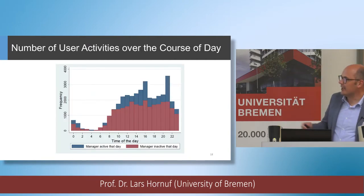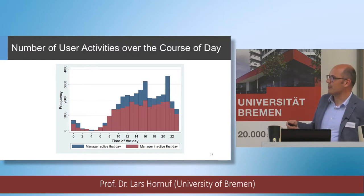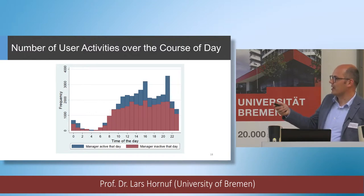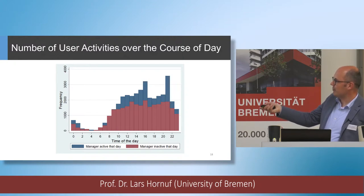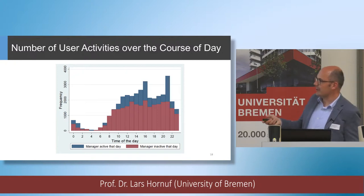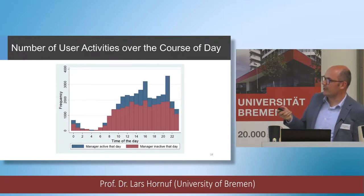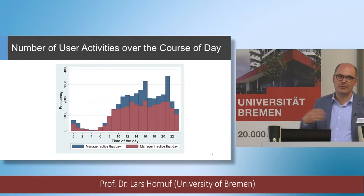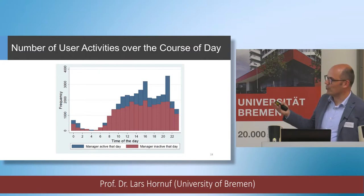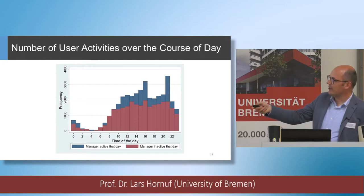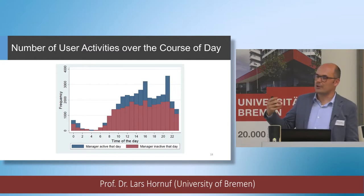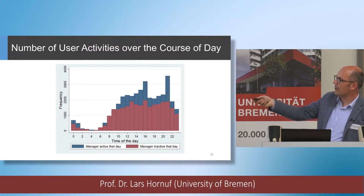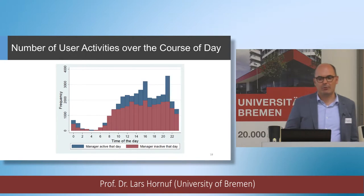Looking at the time of day: the red bars show when the manager was not active and the blue bars when the manager was active. You can see that if the manager is active, there are more user activities. Users mostly get active during regular work hours — contributions start at around 6 in the morning, go on until about 10 at night, and then decrease again with fewer activities.